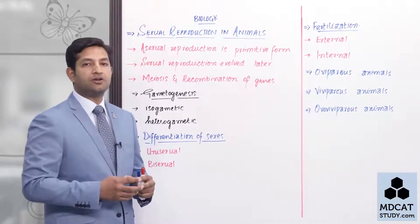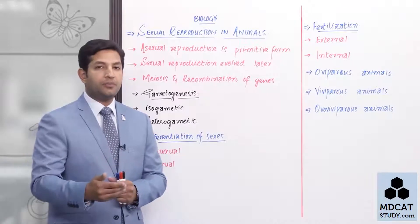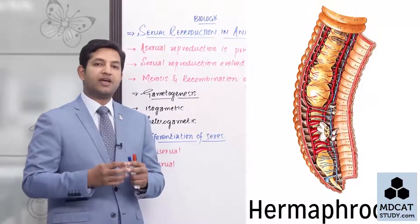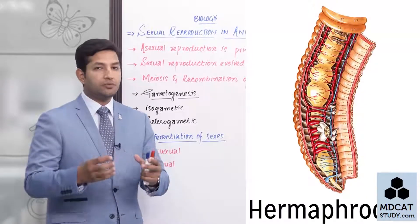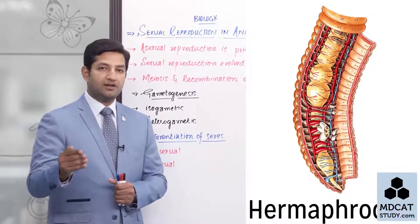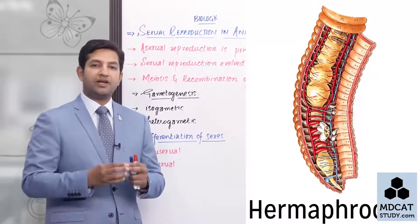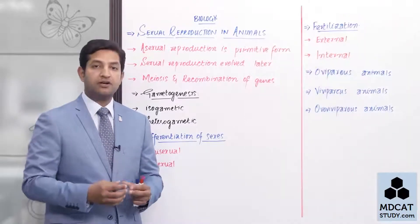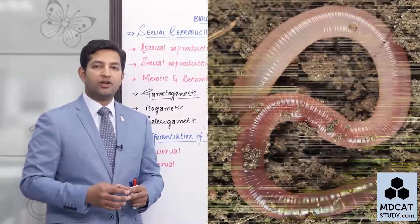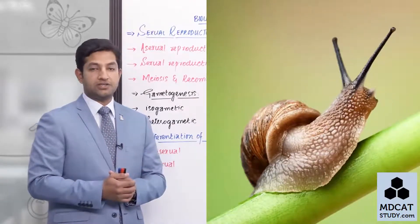If we look at lower or less developed organisms, we see a hermaphroditic condition where some organisms have both male and female reproductive structures present within the same body — both testes and ovaries are found in the same body. Such a body is called a hermaphrodite, and hermaphrodites are also referred to as bisexual organisms, in which different types of reproductive structures are present within one body.